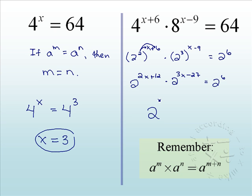2x plus 3x is 5x, positive 12 minus 27 is minus 15, equals 2 to the sixth.